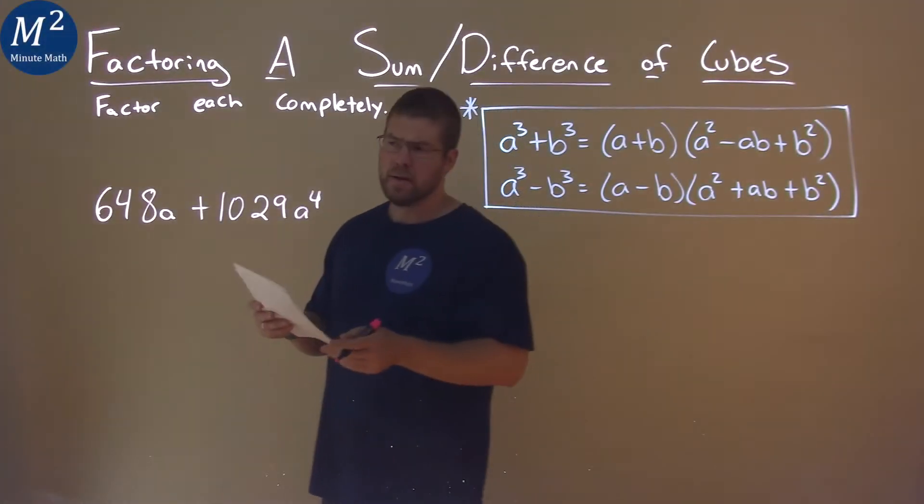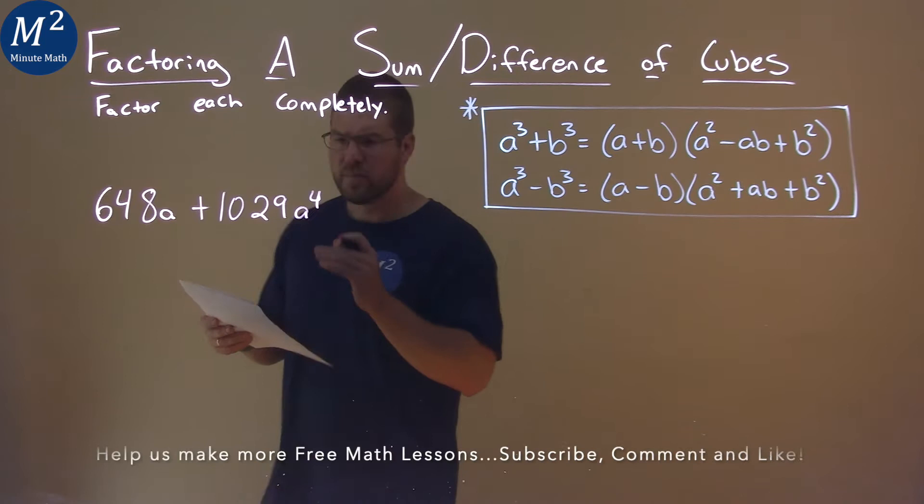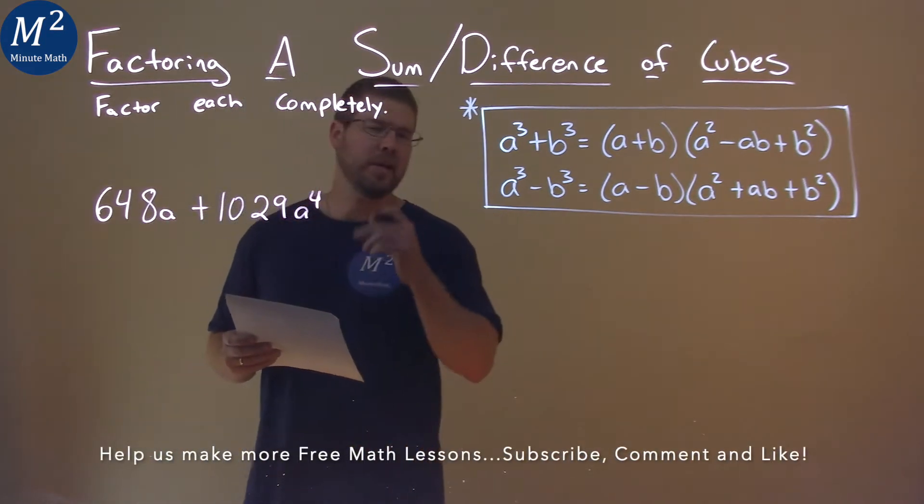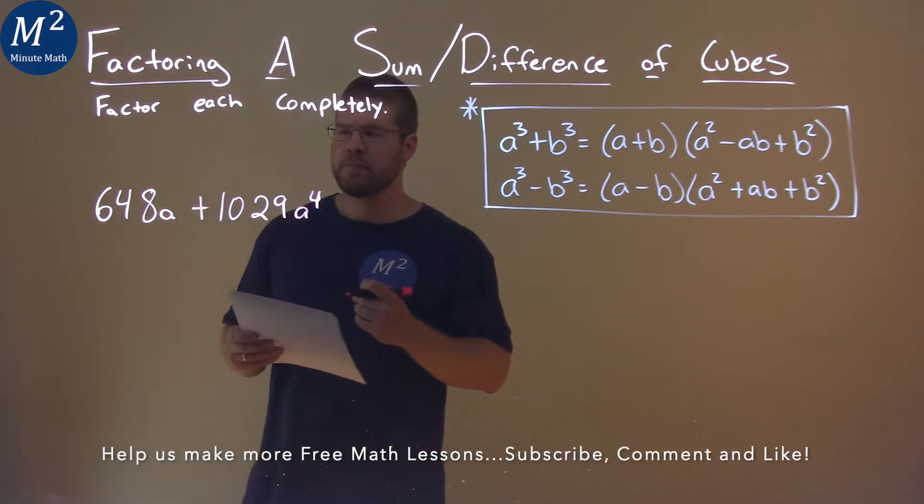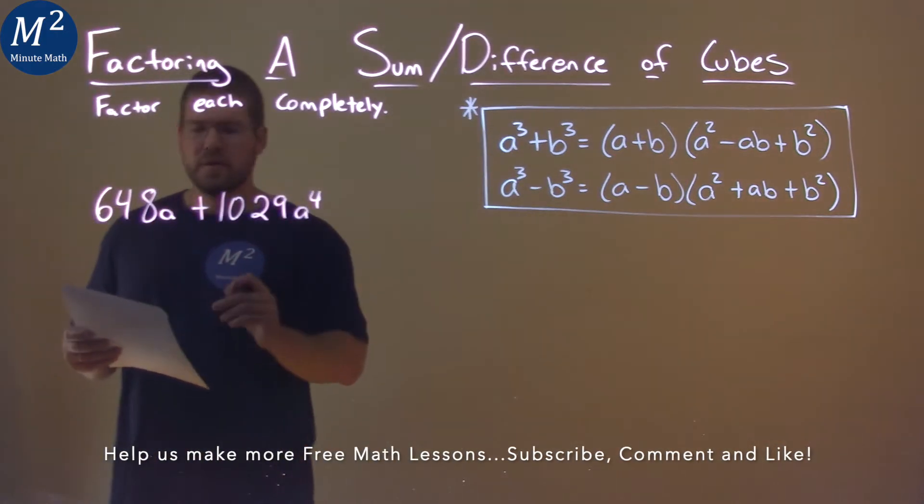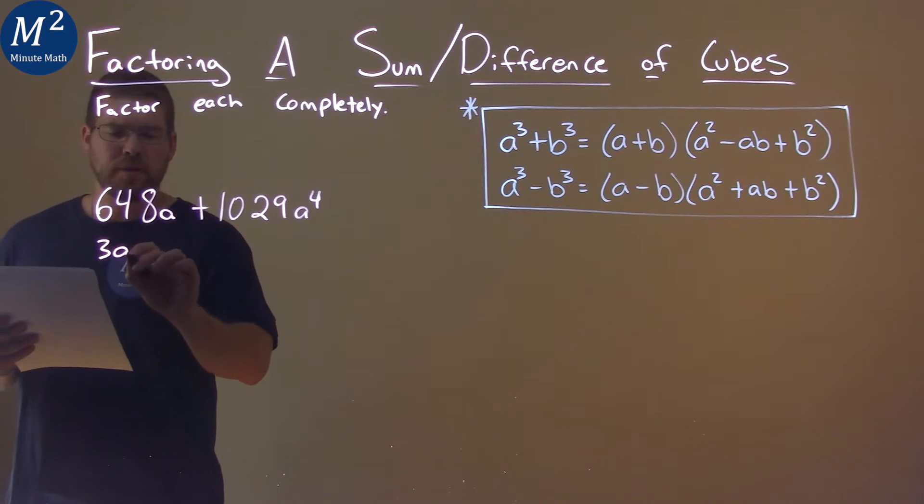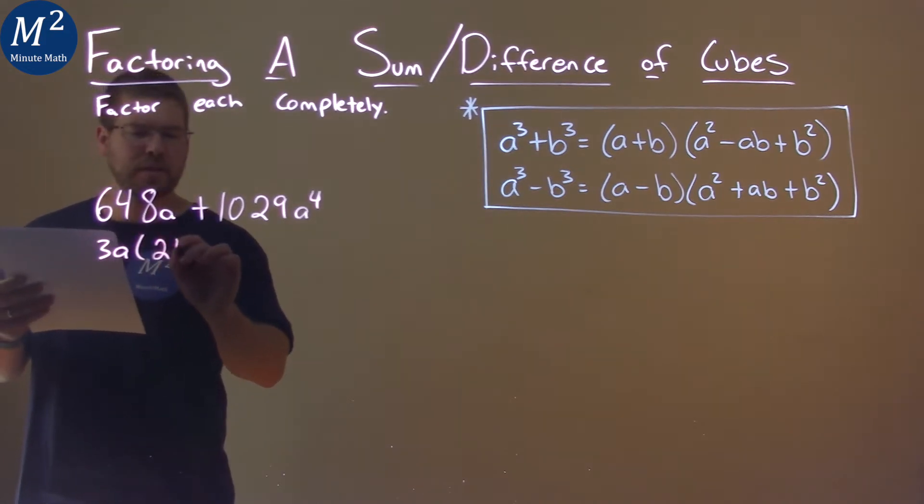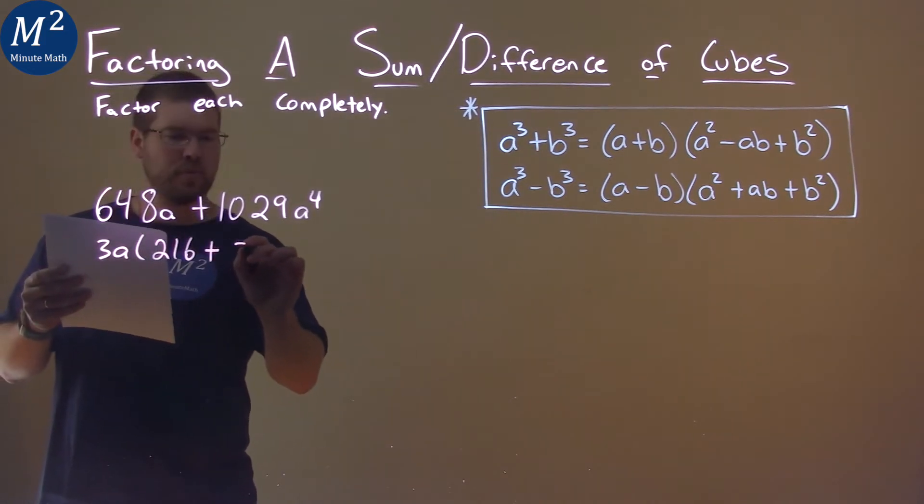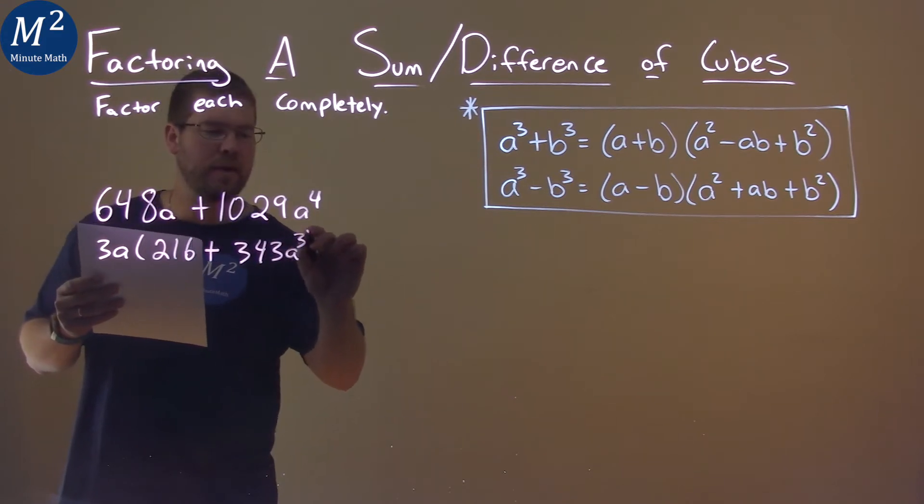We're given this problem: 648a plus 1029a to the fourth, and we need to factor this completely. An a is in both parts, and so is 3. So we're going to pull out 3a from both parts, and we're left with 216 plus 343a to the third power.